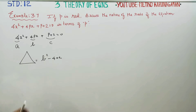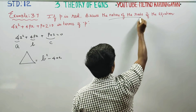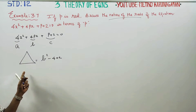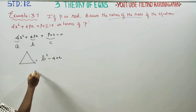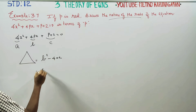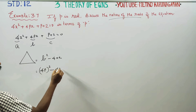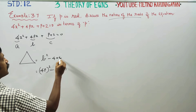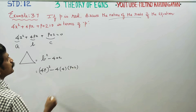Why the discriminant? Because we are talking about the nature of the roots. We have to find delta, the discriminant: b squared minus 4ac. b squared means 4p squared, minus 4 into a. a is also 4, and c is p plus 2.